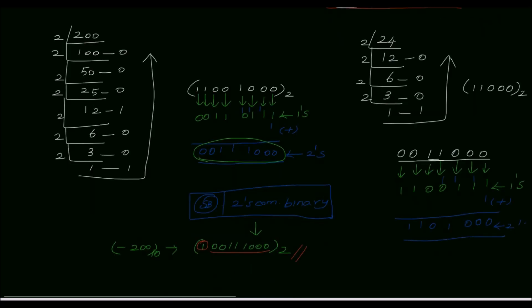Now we represent plus 24 in 2's complement binary form. The syntax is sign bit followed by the 2's complement of the actual binary. For a positive number, the sign bit is 0, followed by 1111 0100 00 in base 2. This is the 8-bit representation of plus 24 in 2's complement binary form. Thanks for watching this video, please subscribe for more videos.